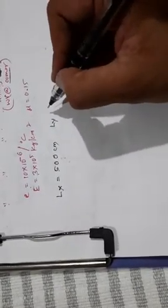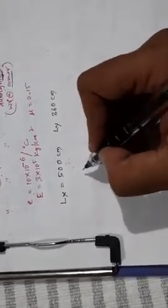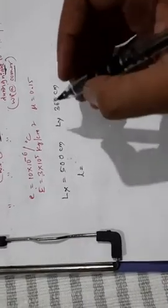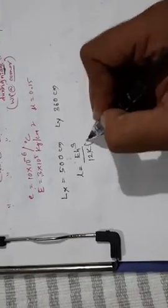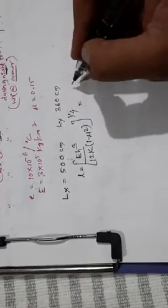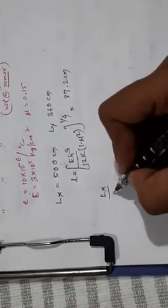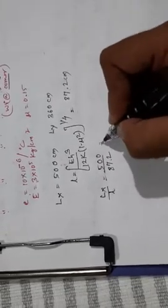For that let us find L. L will be the fourth root of Eh cubed over 12k times 1 minus mu squared. That will be around 87.2 centimeter.